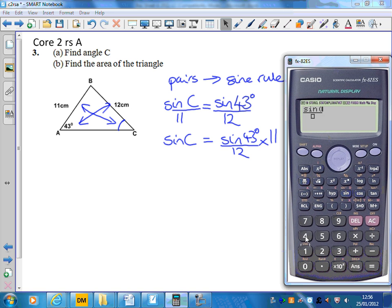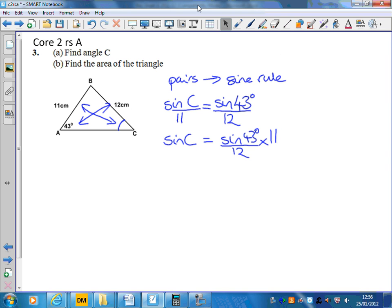Using the relevant buttons, put this in: sine 43 divided by 12 times 11. I must make sure I'm in degrees mode before I do this, so that's 0.625.